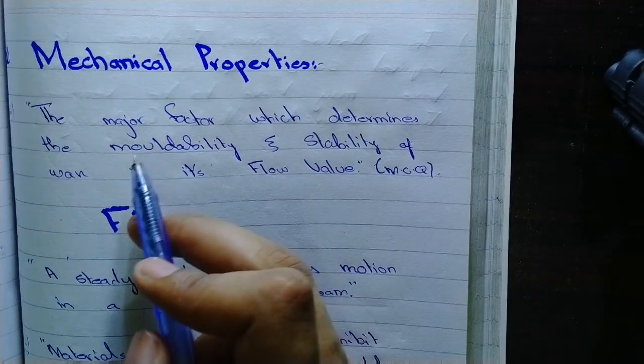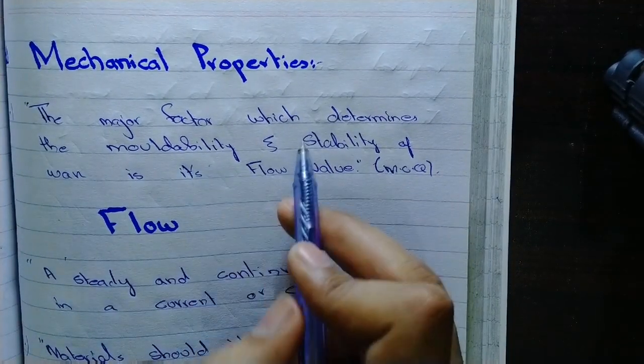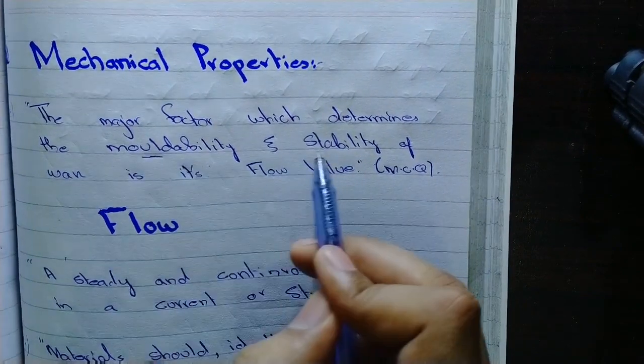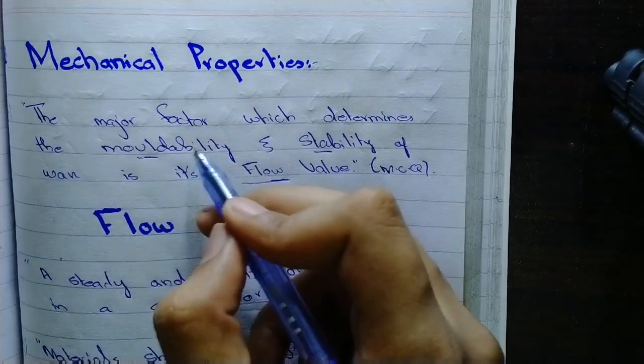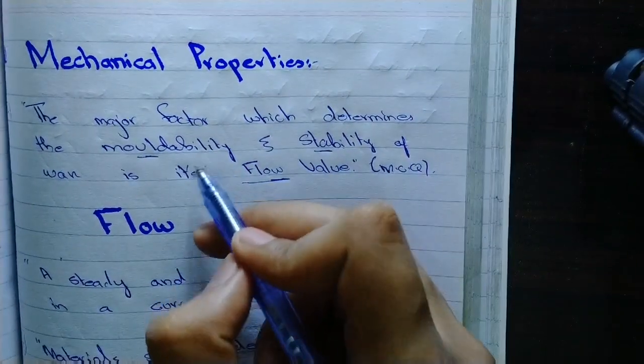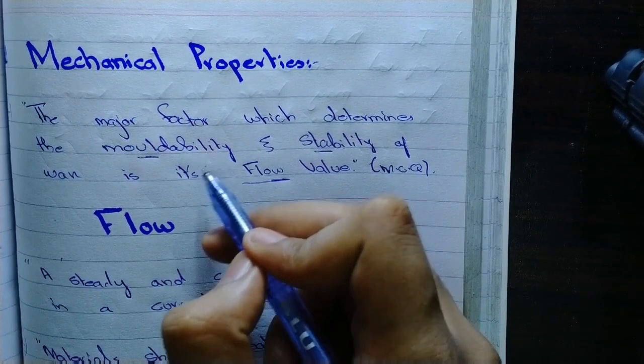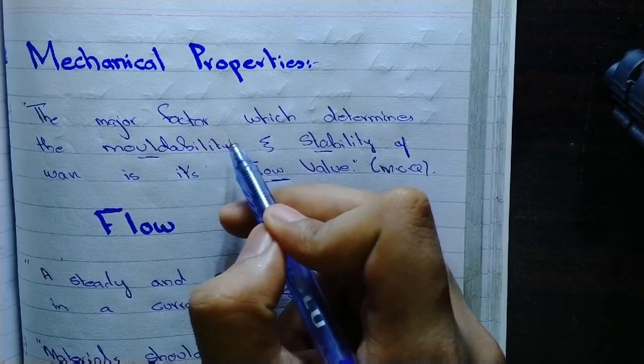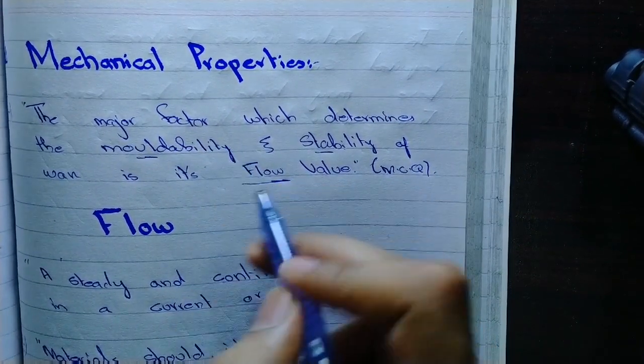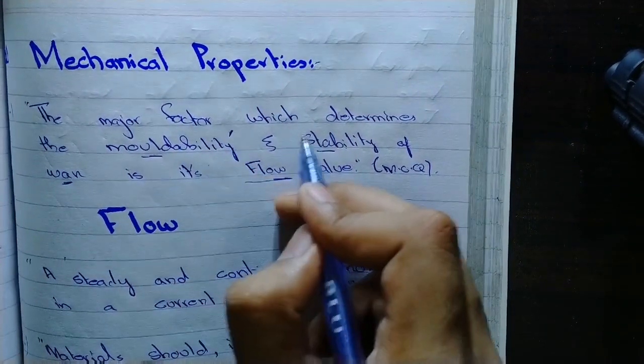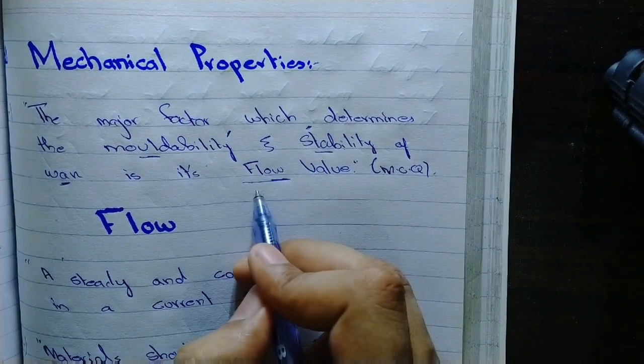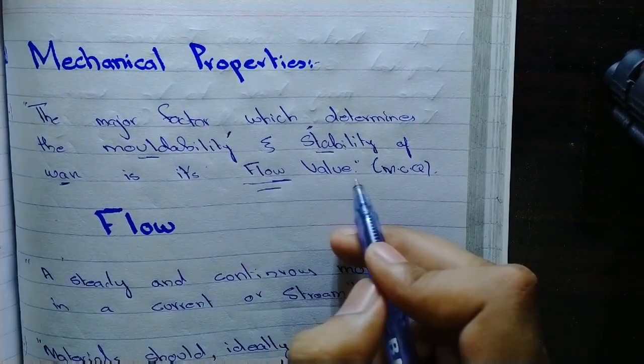Now the mechanical properties. The major factor which determines the moldability and stability of wax is its flow value. Here moldability means how plastic is wax to be adopted in any shape, and how is the dimensional stability of the wax. These two properties depend on its flow value and it is frequently asked in the MCQs.